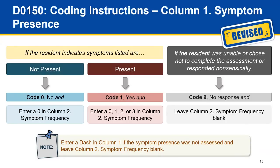The coding of symptom presence can inform the coding of symptom frequency. In the teal colored boxes, if column 1 symptom presence is coded with a 0 (no), then you would also code column 2 symptom frequency as a 0. In the red colored boxes, if column 1 is coded with a 1, then you would enter a 0, 1, 2, or 3 in column 2 symptom frequency. In the gray boxes, if you code column 1 symptom presence with a 9, then leave column 2 symptom frequency blank. New guidance also states: enter a dash in column 1 if the symptom presence was not assessed and leave column 2 symptom frequency blank.